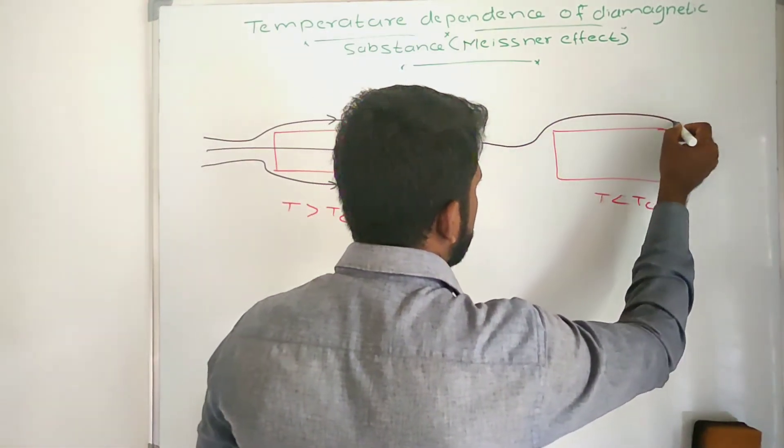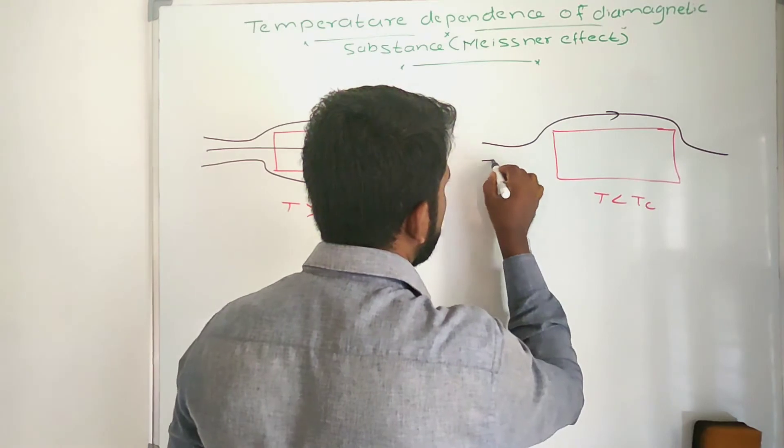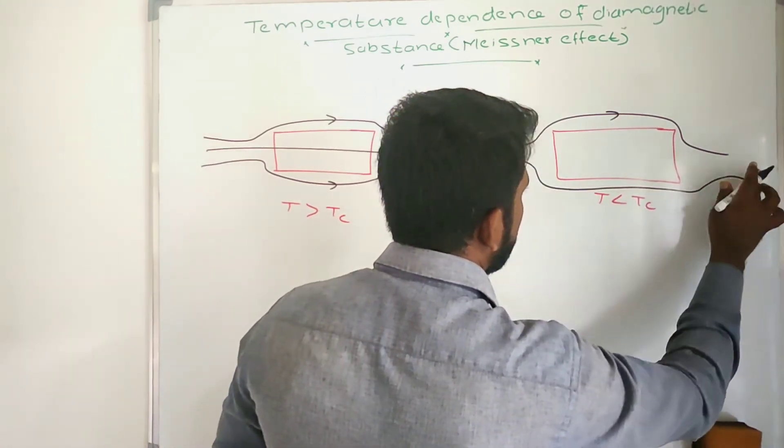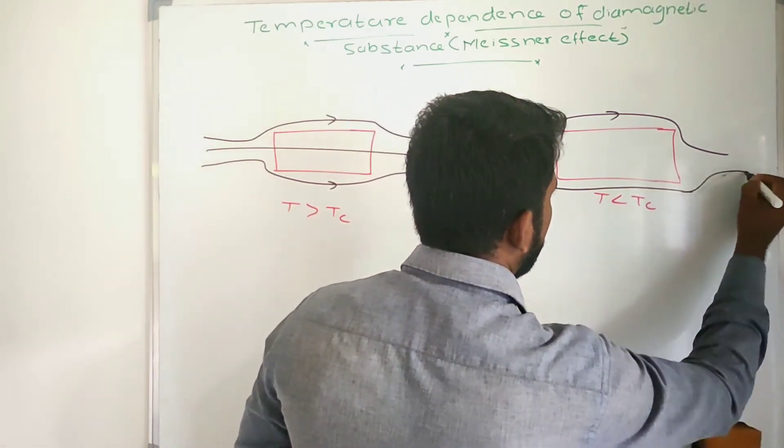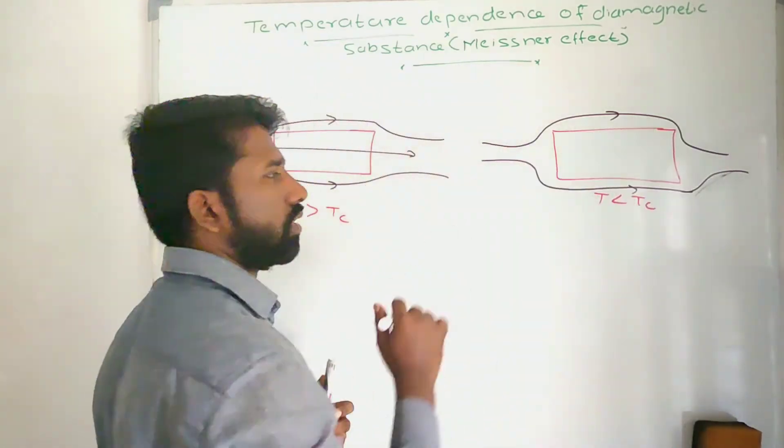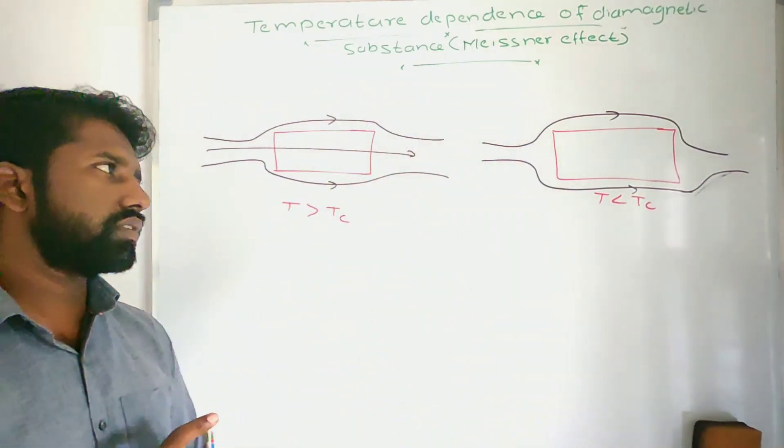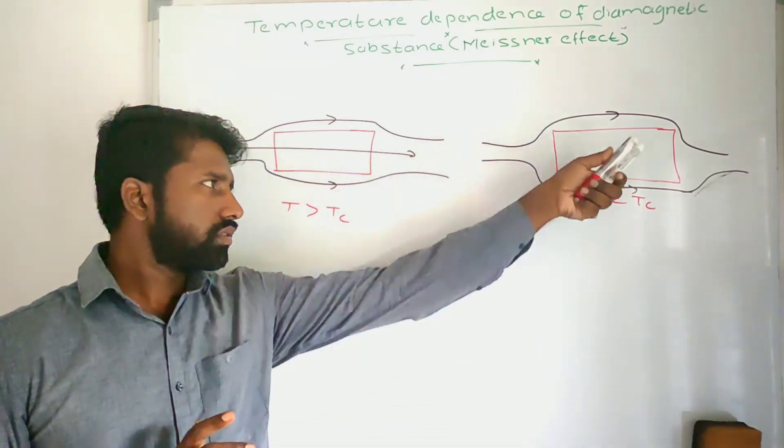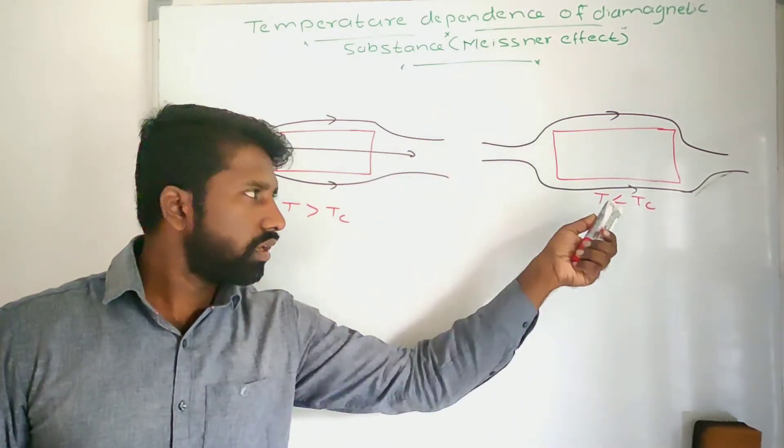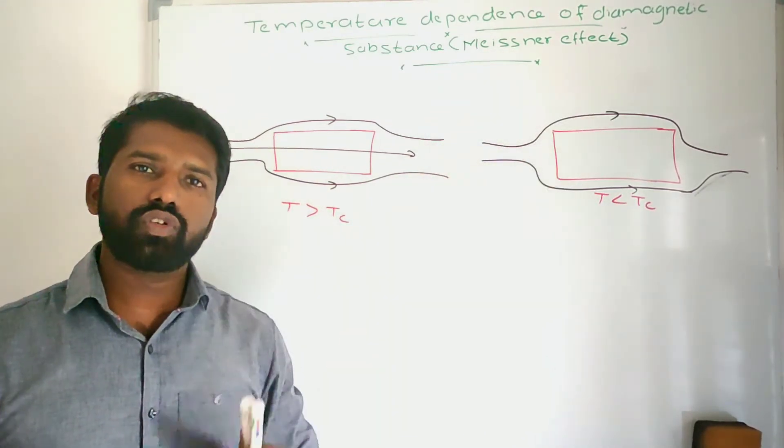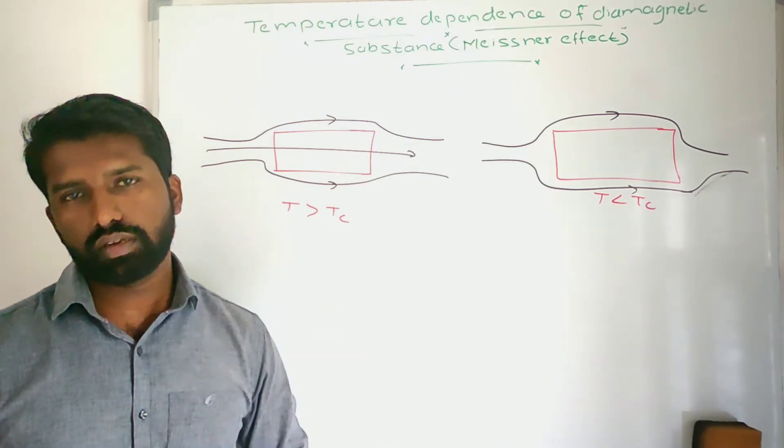if you see like this, the field lines are completely expelled out. All the field lines are expelled out. That means this substance at this temperature shows perfect diamagnetism.